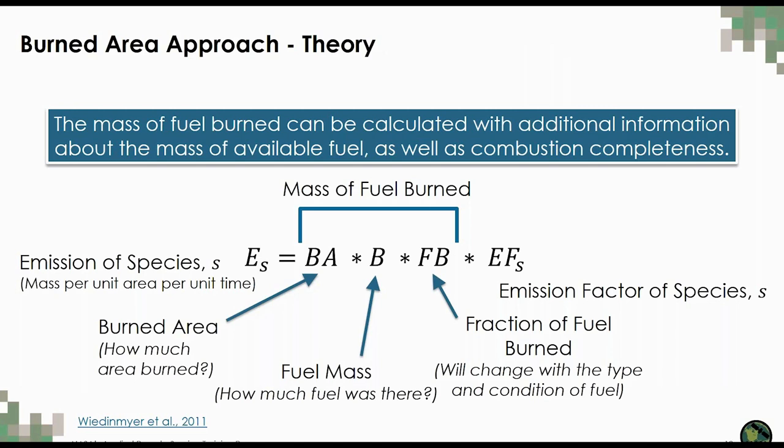Using the burned area approach, the emission of a species is calculated as a function of the burned area, the mass of available fuel, the fraction of that fuel that has burned, and the emission factor for that species. The emission specifies a mass per unit area per unit time, also referred to as a flux. To calculate fire emissions using this method, you not only need information about fire — you also need information about the amount and condition of the vegetation.